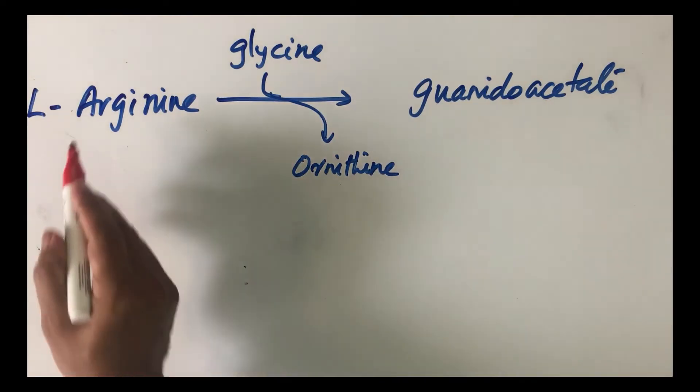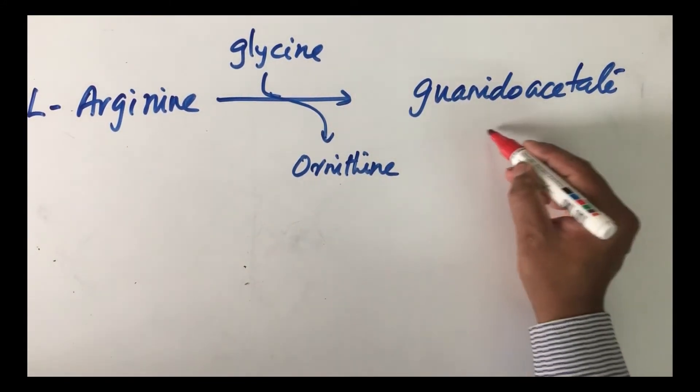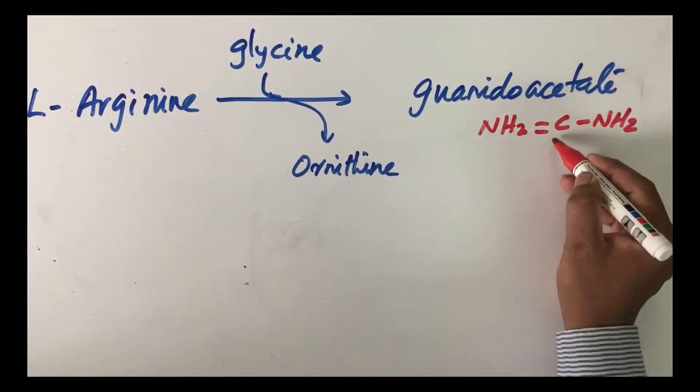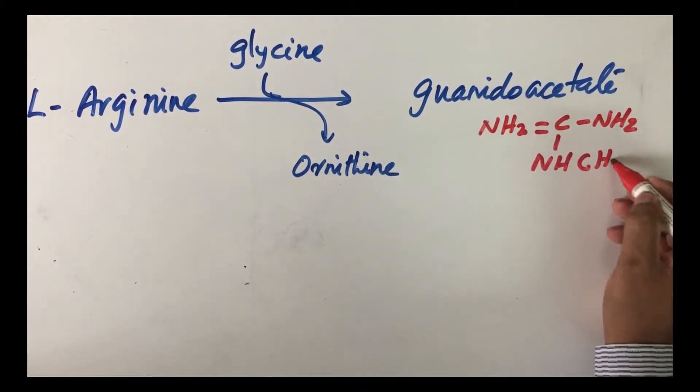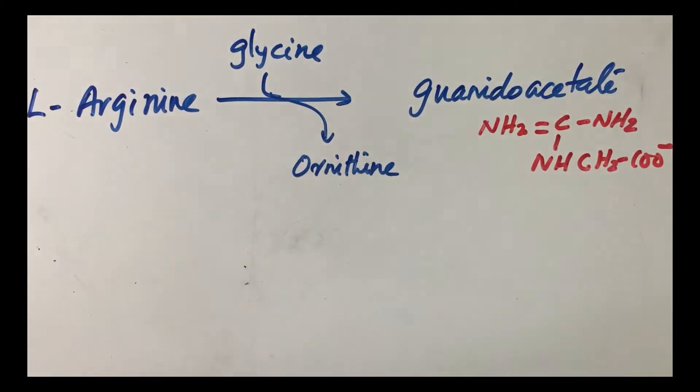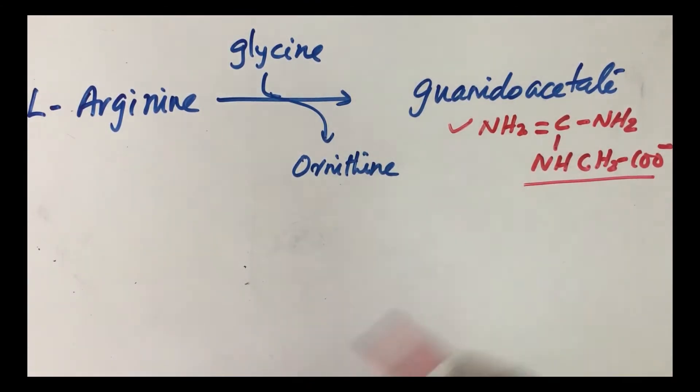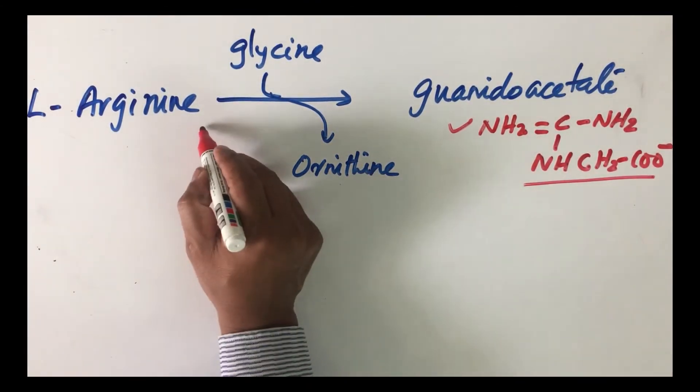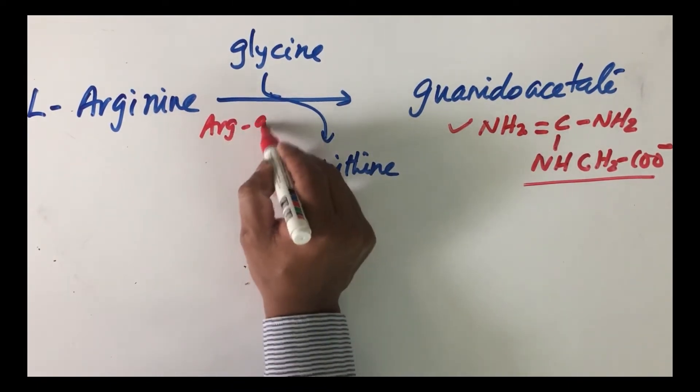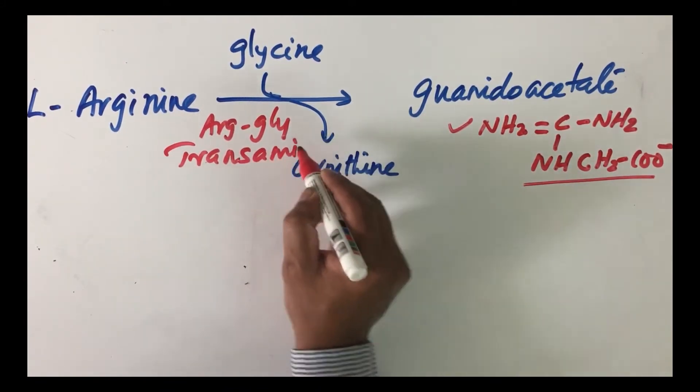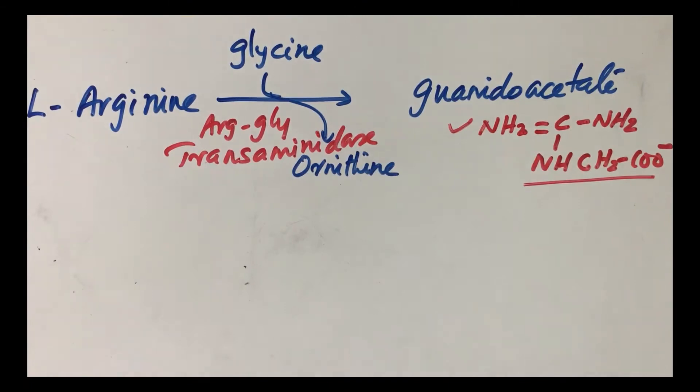You are familiar with the structure of arginine, familiar with the structure of ornithine. Let us write down the structure of guanidoacetate. This is the portion that will come from arginine and this is the portion that will come from glycine. This is catalyzed by an enzyme known as arginine glycine transamidinase. We produce guanidoacetate.